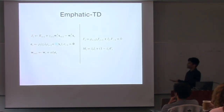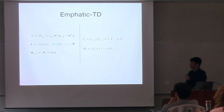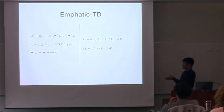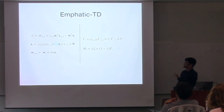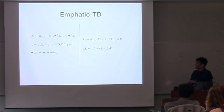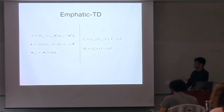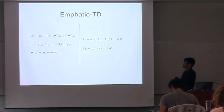We have this emphasis algorithm that essentially answers how we should combine the intrinsic interest that we have on a state or state-action pair with the interest through bootstrapping. And that brings us to emphatic TD. On the left, you have the original TD lambda algorithm if M is set to 1. M is what we call the emphasis.